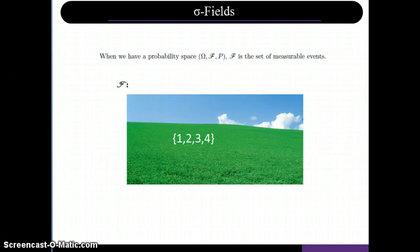Alright, sigma fields. Now we can talk about sigma fields in the setting of a probability space. And a sigma field is basically a set of measurable events. And you might ask what exactly a set of measurable events look like.